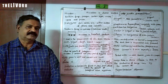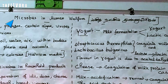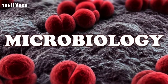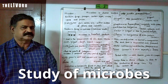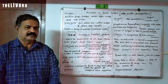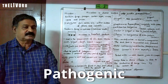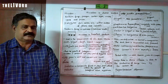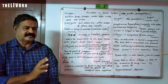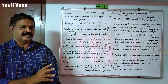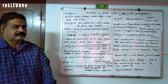Today we are going to deal with a new chapter: Microbes in Human Welfare. In short, that is microbiology — the study of microbes related to human welfare. In this case, many microbes are pathogenic, i.e., disease-producing. But we will concentrate on how microbes relate to human welfare.